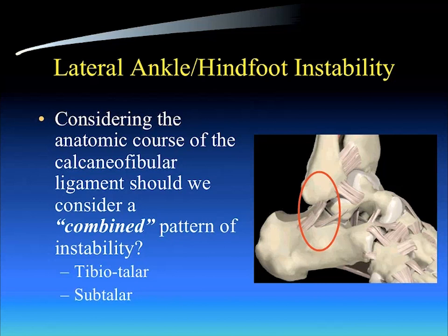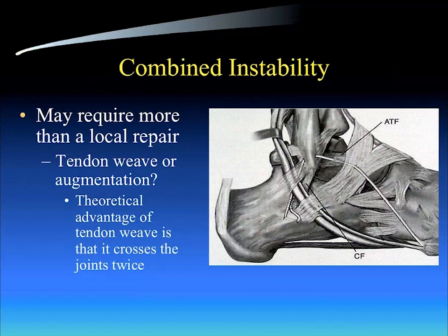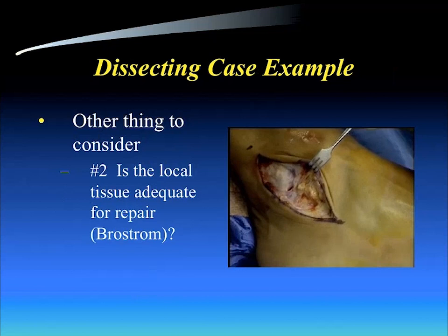We might need to think beyond just isolated local anatomic repairs when patients may have combined instability. Perhaps they require more than just a local repair — perhaps a tendon weave, an augmentation, something that crosses both joints twice. That is the theoretical advantage of some of the tendon weave procedures described in the '80s — the Chrisman-Snook, the modified Elmsley — which provided stability to not only the tibiotalar joint but the subtalar joint as well.